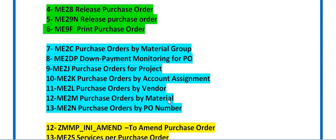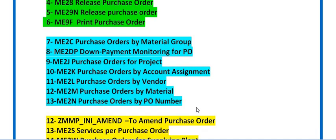ME2M gives purchase orders by material — if you have a material code and want to check the purchase orders list, you can use ME2M. If you know specific purchase order numbers, you can enter them in the next transaction code and retrieve that data.